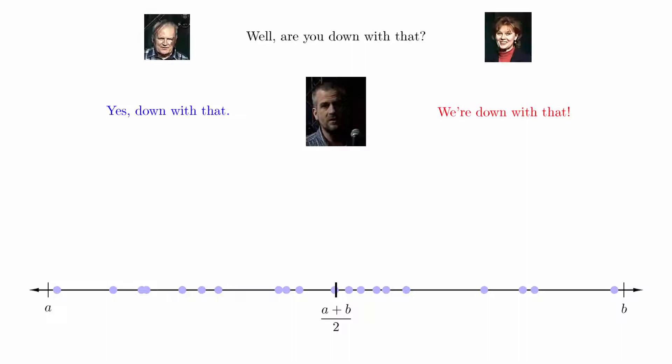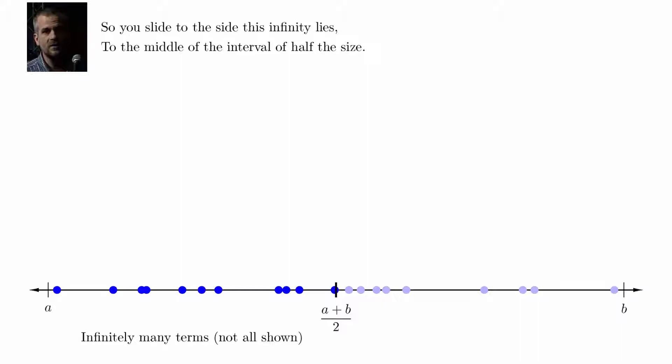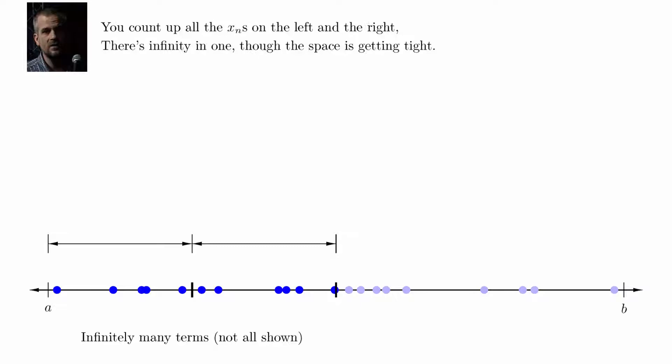Well, are you down with that? We're down with that. Yo, are you down with that? We're down with that. So you slide to the side, this infinity lies. To the middle of the interval of half the size. This new interval, I said it's half as long, contains an infinite subsequence if my logic ain't wrong. Now you do it again. Divide the line in two. And if you paid attention, you'll know just what to do. You count up all the X's on the left and the right. There's infinity in one, though the space is getting tight.